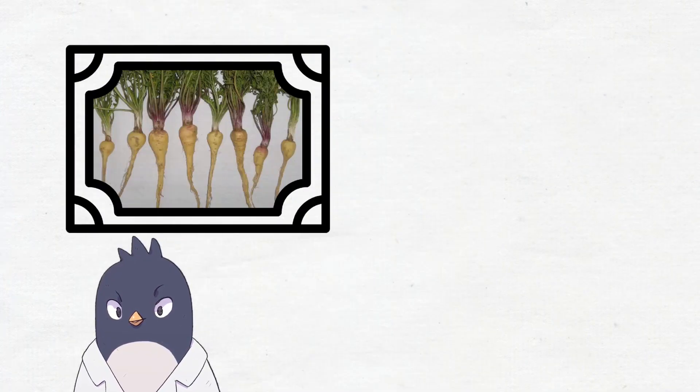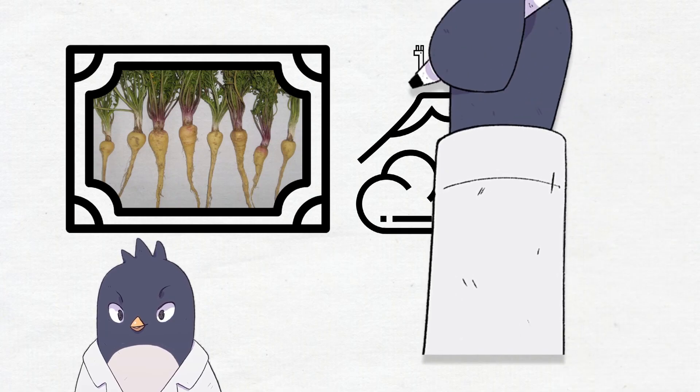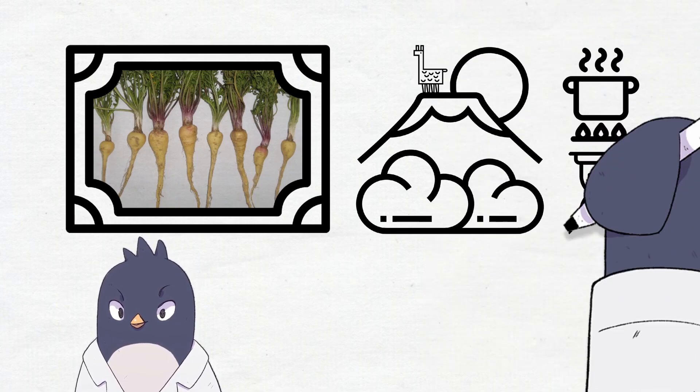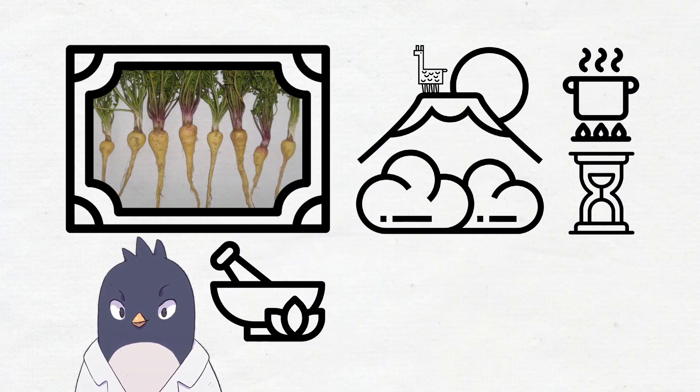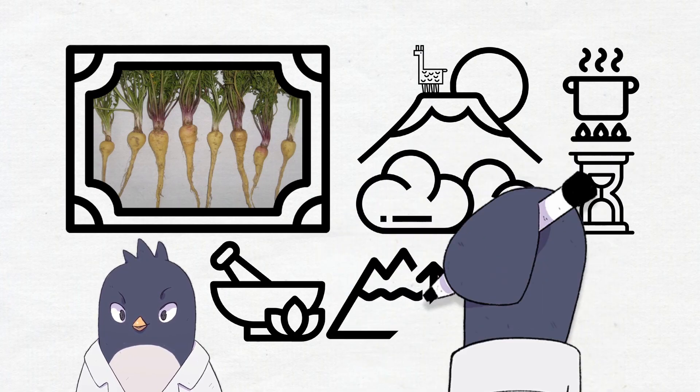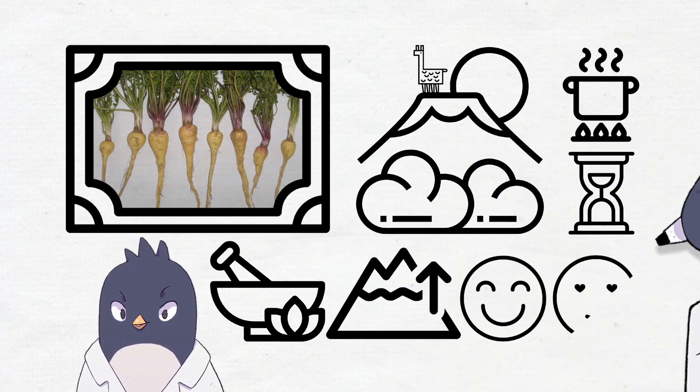This is maca, an edible root that grows in the high Andes mountains of Peru. It's been used for cooking in those parts for a long time, but also has some history in traditional medicine, being used for adjusting to high altitude, improving mood, and getting people in the mood.